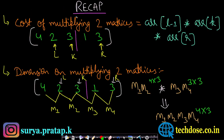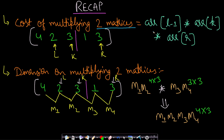Just for a recap, we know that the cost of multiplying two matrices equals array[l-1] times array[k] times array[r]. Let's take an example — the indices are 0, 1, 2, 3, and 4.